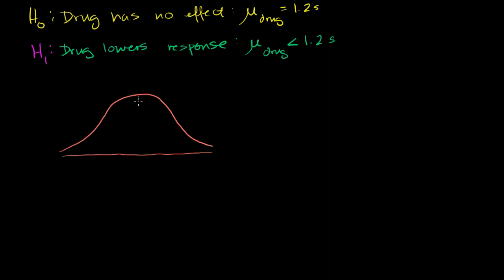That's the sampling distribution. It has a mean right over here at 1.2 seconds. And the result we got was three standard deviations below the mean. Three standard deviations below the mean. One, two, three standard deviations below the mean. That was what our 1.05 seconds were.